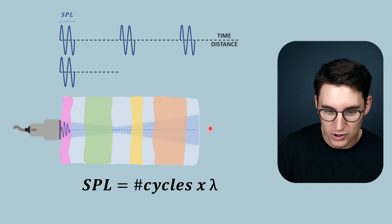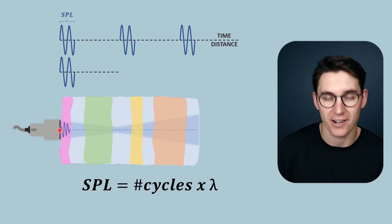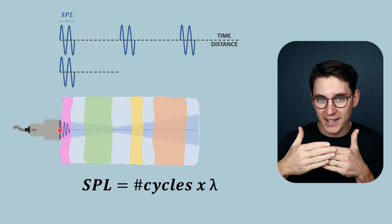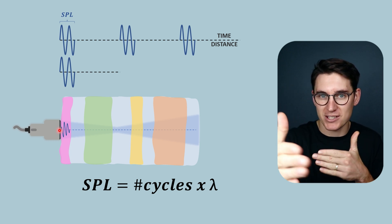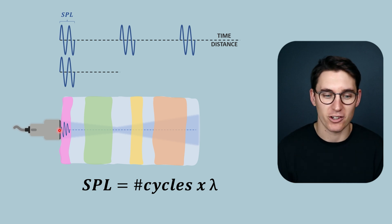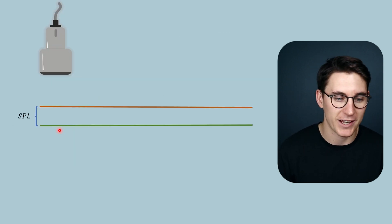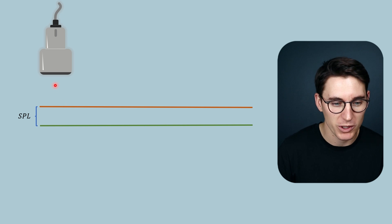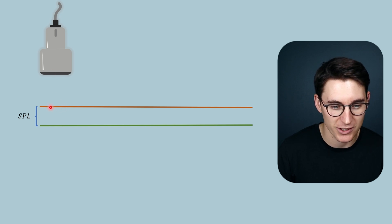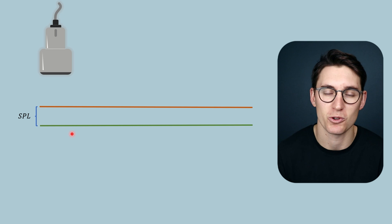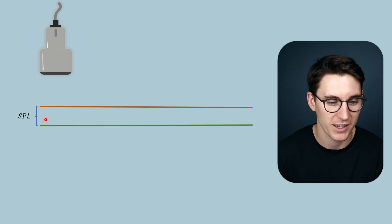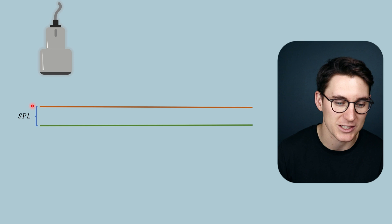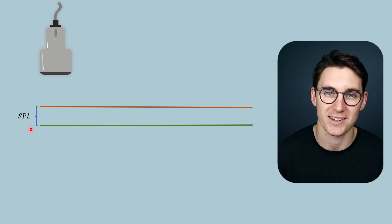Our spatial pulse length determines our axial resolution in tissues. It travels in the longitudinal plane, and our returning echoes are also in that longitudinal plane, giving us resolution in the depth plane of our image. In this example, the distance between the two tissue boundaries is equal to the spatial pulse length.